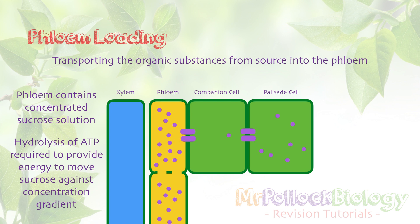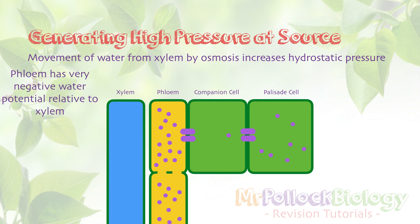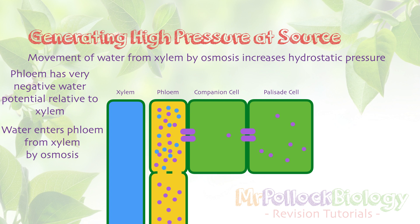The second stage is all about generating a high hydrostatic pressure — that's water pressure — at the source. Because we've loaded loads of sucrose into the phloem, the phloem has a ridiculously negative water potential compared to the xylem. The xylem pretty much only transports water, so its water potential is close to zero. Water therefore enters the phloem by osmosis through a semi-permeable membrane, and as that water enters it raises the hydrostatic pressure in the phloem at the source end.